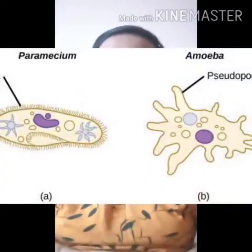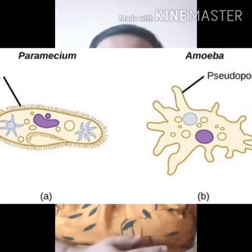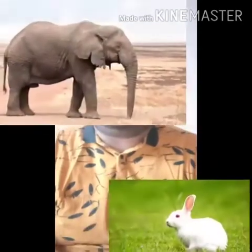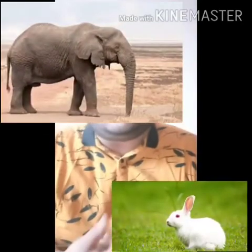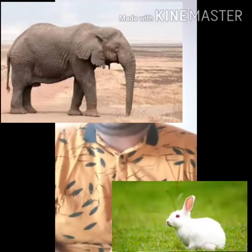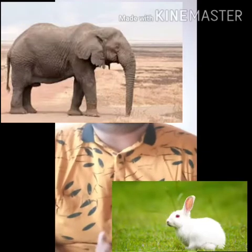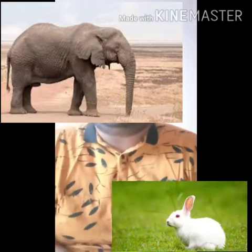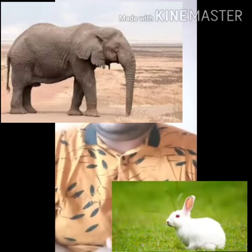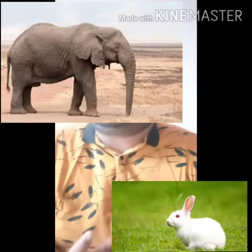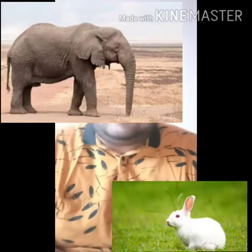Examples of unicellular organisms are amoeba and paramecium. Multicellular animals include humans, birds, ostrich, and elephant. Human beings are also multicellular. Cellular structure is a main characteristic of living things.